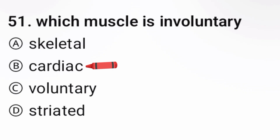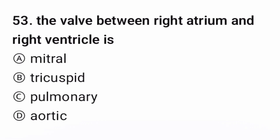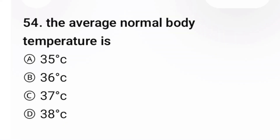Question 51: Which muscle is involved in breathing? The correct option is B. Question 52: The transparent part of the eye is — the correct option is B. Question 53: The valve between the right atrium and right ventricle is — correct option is B.